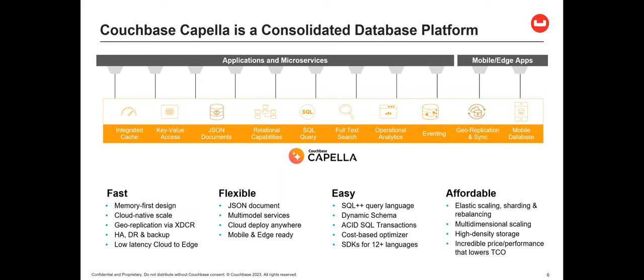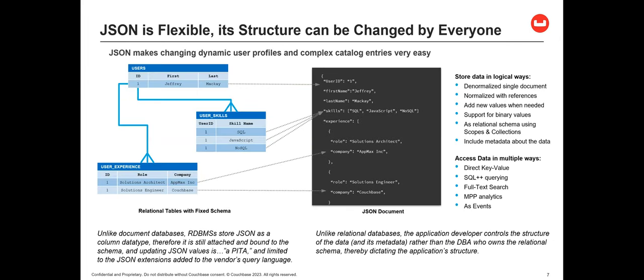Couchbase is built from the merger of Memcached and CouchDB — those teams merged and rewrote a brand new database. It's really the original multi-model database with an integrated cache, key-value access, and the flexibility of a JSON data store. You get relational capabilities like ACID transactions and joins across document collections, full-text search, analytics, eventing capabilities, and geographic replication and synchronization built in for mobility. We're also seeing interest in using JSON not only as the vehicle for your data, but also as a payload for metadata in managing a data mesh or data catalog.